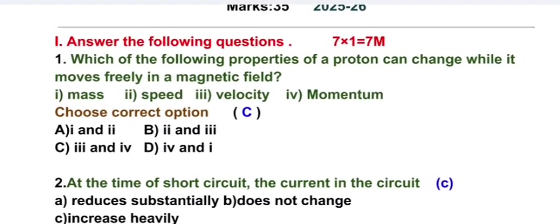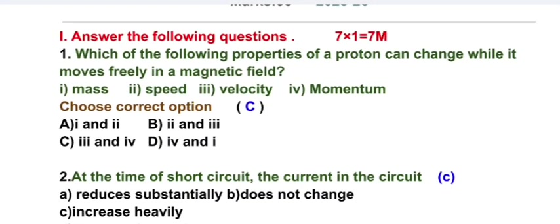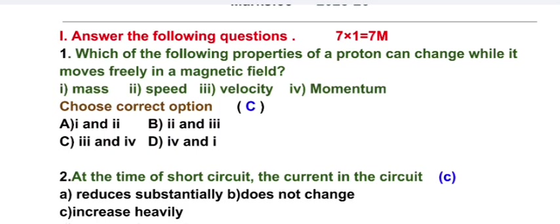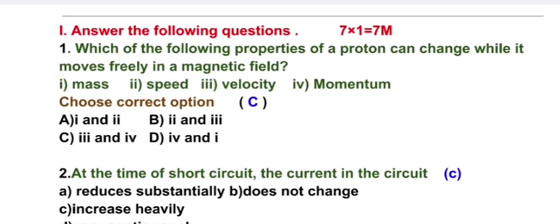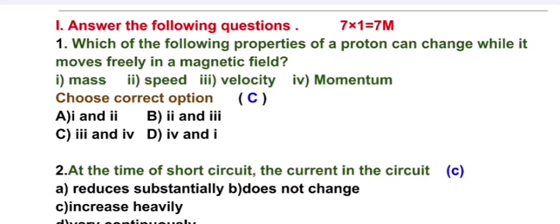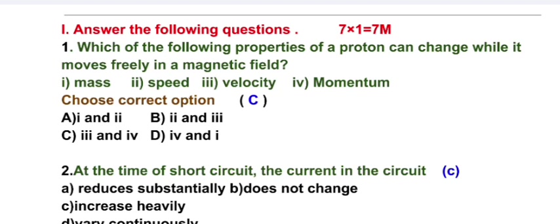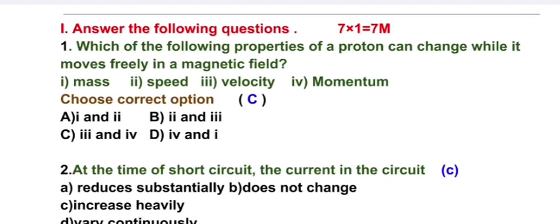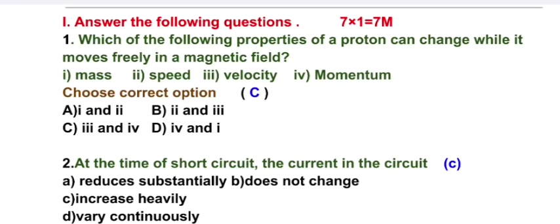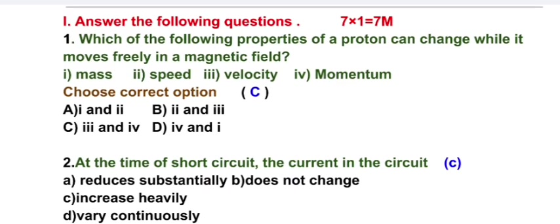Answer the following questions: 7 into 1 equals 7 marks. Which of the following properties of a proton can change while it moves freely in a magnetic field: mass, speed, velocity, momentum? Choose correct option C, that is velocity and momentum. Whenever velocity changes, definitely momentum also changes.